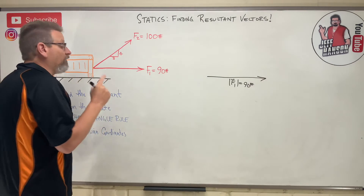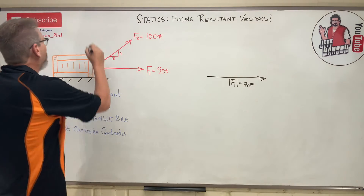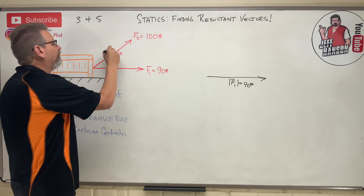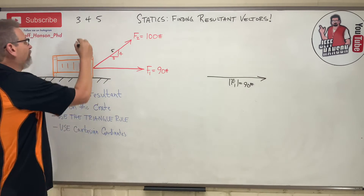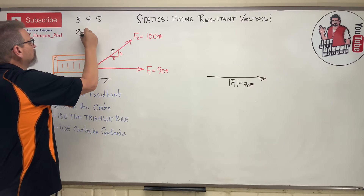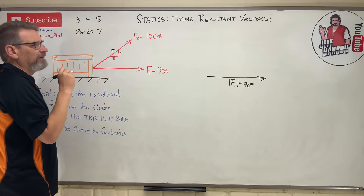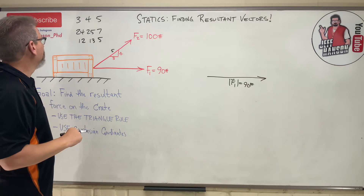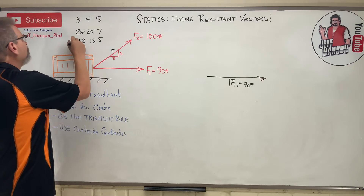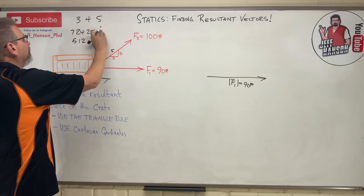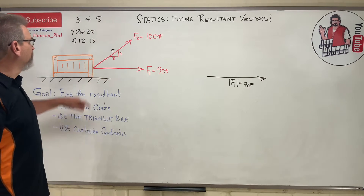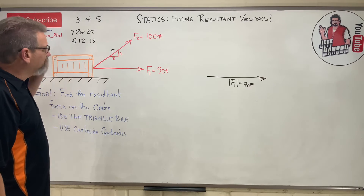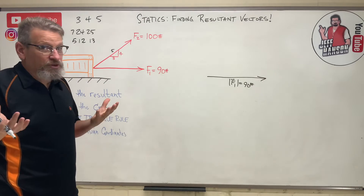Remember the special triangles where all sides are whole numbers: the 3-4-5 triangle, the 7-24-25 triangle, and the 5-12-13 triangle. These are the ones you'll see most often in statics textbooks — just a helpful hint. Those are the three I can remember.